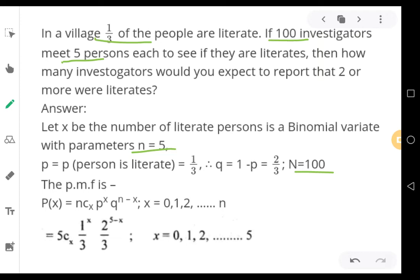Proceeding further, then how many investigators would you expect to report that two or more were literates? So they are asking us the probability of finding two or more literates. Two or more, they are not telling more than two. They are telling two or more. That means two is also included. They should either get two literates or three or four or five.